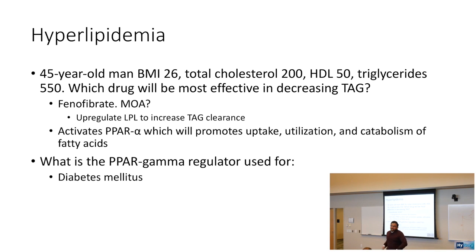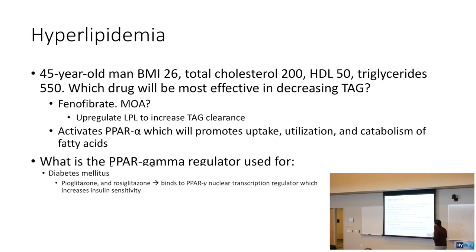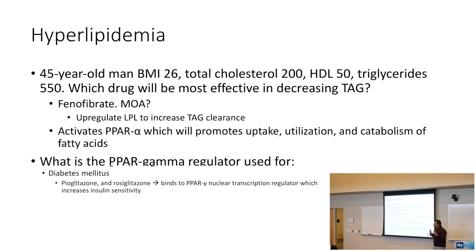You get confused sometimes about alpha and gamma. PPAR-gamma is going to be related to diabetes mellitus, and we are talking about the drugs pioglitazone and rosiglitazone. What these glitazones are going to do is bind to the PPAR-gamma nuclear transcription regulator, and in diabetes, increase insulin sensitivity, which is going to be really important in lowering glucose concentrations.